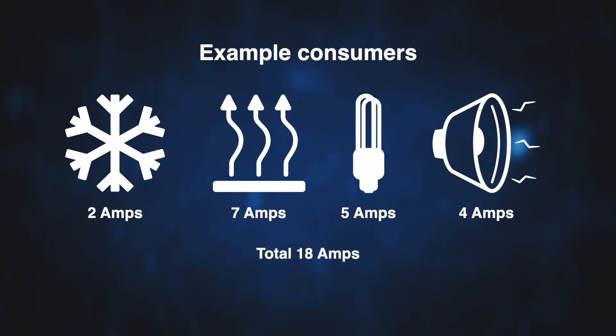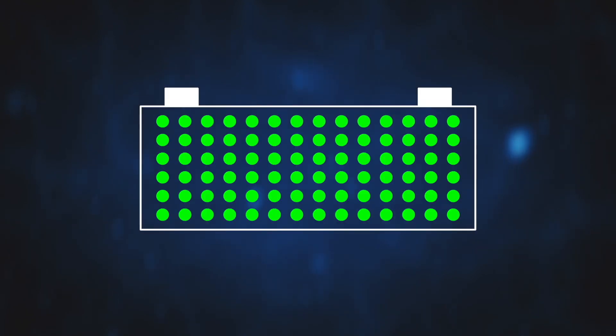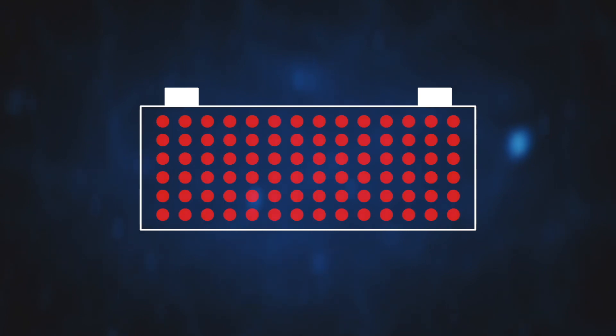If these additional consumers are used together for a period of 10 hours whilst the vehicle is parked, they will collectively consume 180 amp-hours from the battery pack. A commercial vehicle battery should not be discharged below 50% otherwise permanent damage will occur.